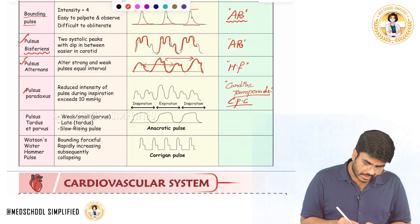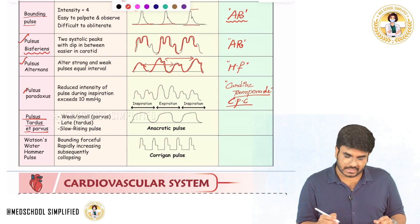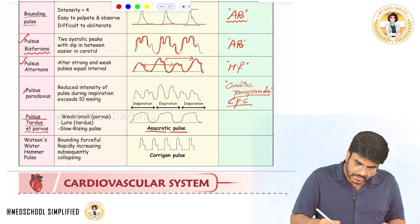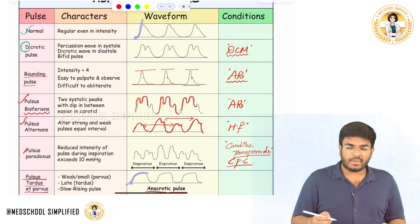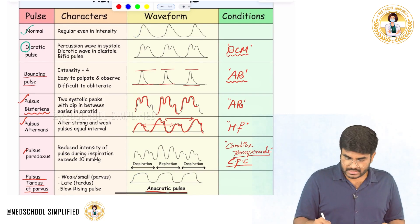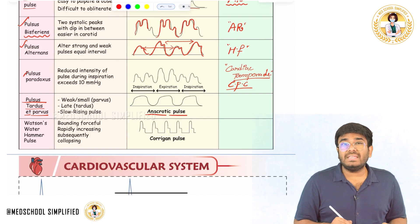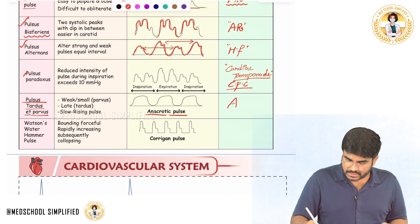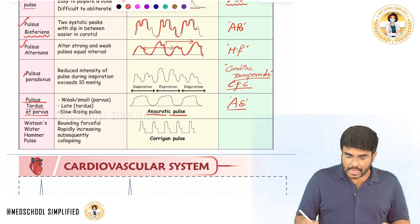Next, pulsus parvus et tardus — also called anacrotic pulse. Pulsus parvus et tardus means a slow-rising pulse. The pulse is rising slowly, whereas normally the pulse should rise fast during systole. So these are weak, slow-rising pulses. In which condition? In left ventricular outflow tract obstruction — that is aortic stenosis. A person with aortic stenosis is going to have pulsus parvus et tardus, also called anacrotic pulse.